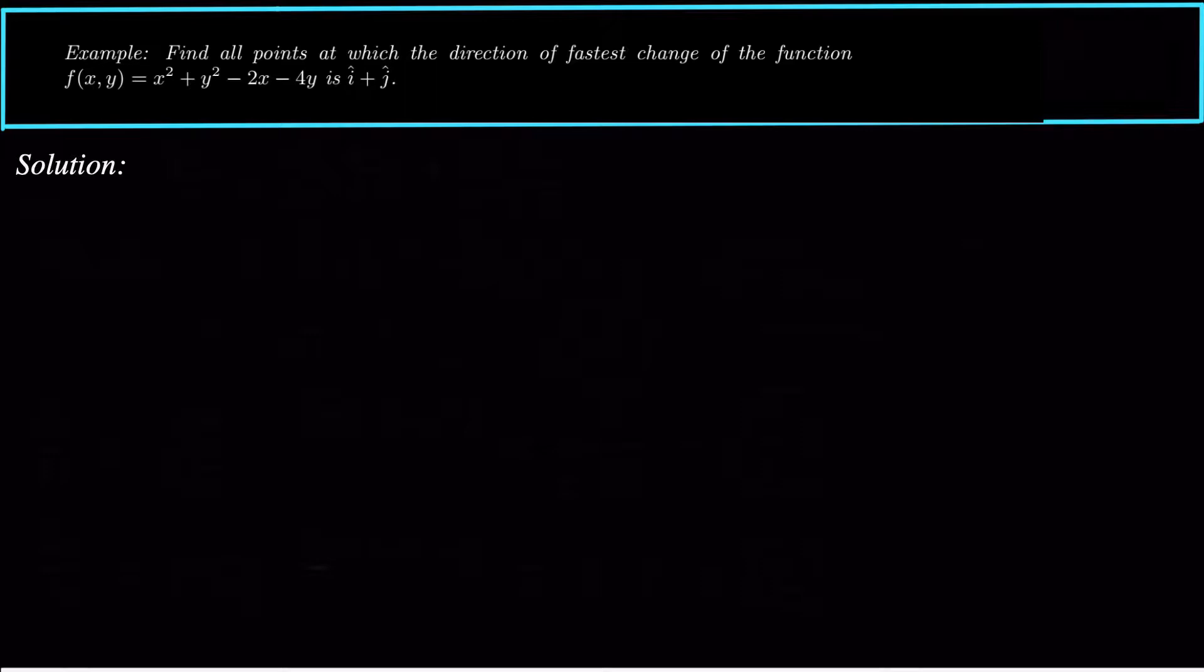First of all, the problem says find all points at which the direction of fastest change of the function is this vector. So what exactly does that mean? This function f changes at every point, and if you look in different directions it has different rates of change. So we want to know what points does this function have a fastest rate of change that's in the direction of this vector.